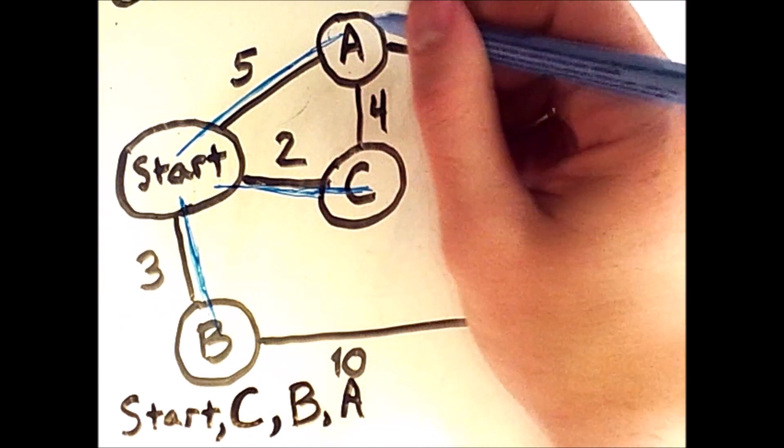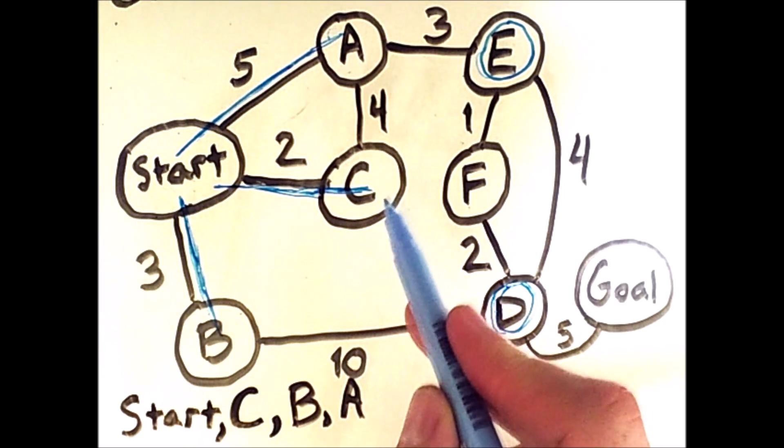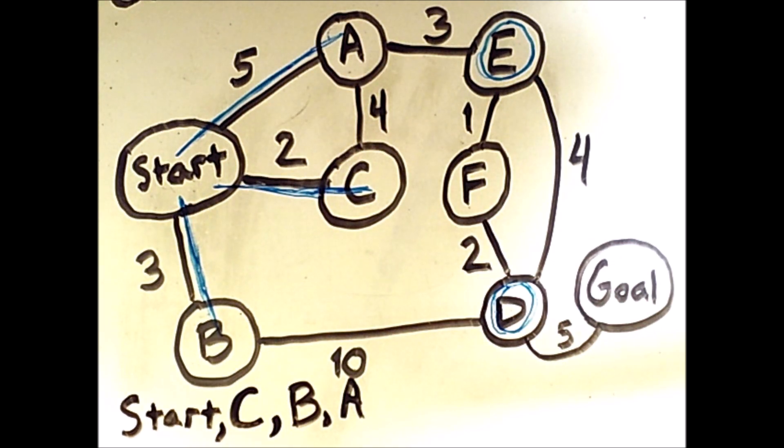So we've currently visited start, C, B, and A, and the fringe consists of E and D. So what are the costs to reach E and D respectively? As I already mentioned, the cost to reach D is 10 plus 3, which is 13.